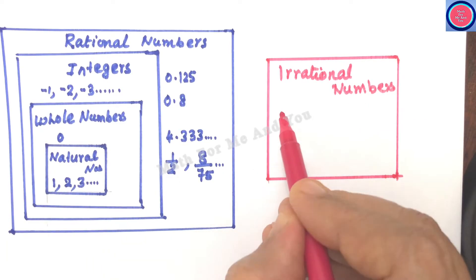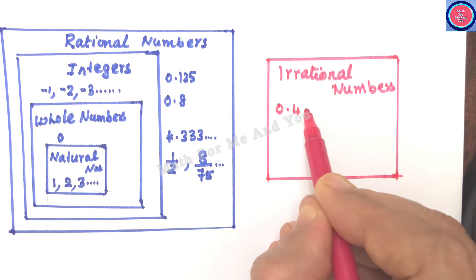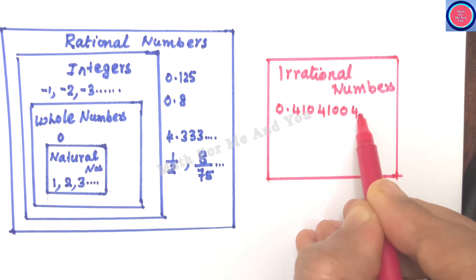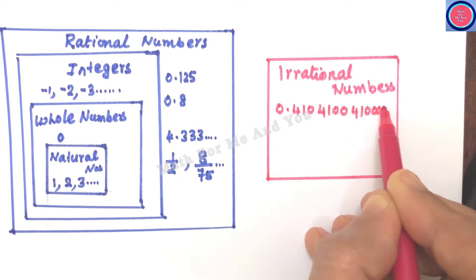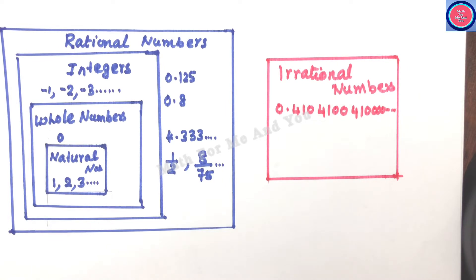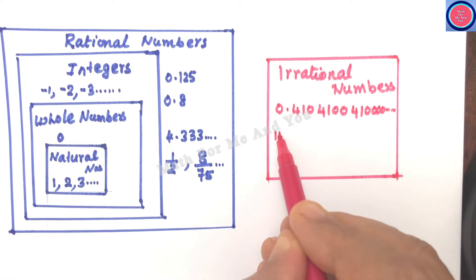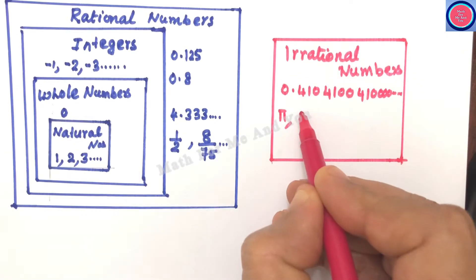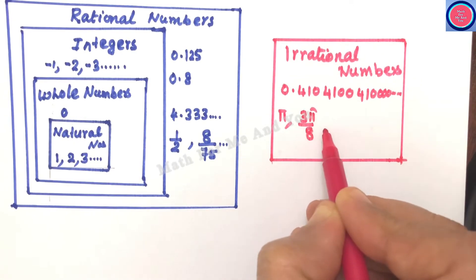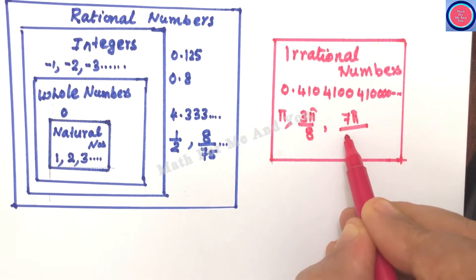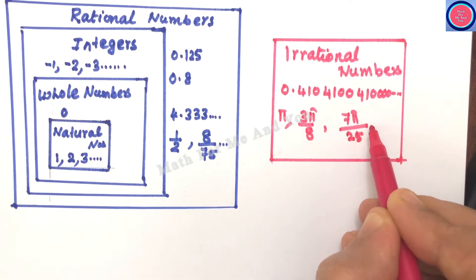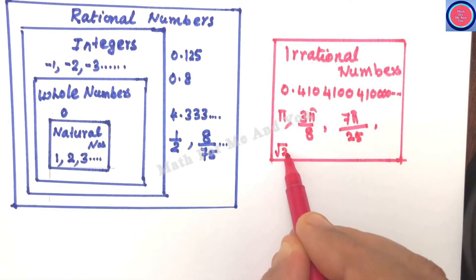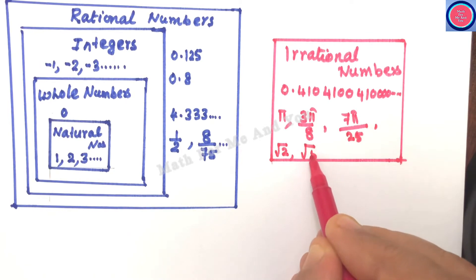The numbers which are not rational are known as irrational numbers. Non-terminating non-repeating decimals are irrational numbers — for example, 0.4104100... etc. Numbers connected with pi are irrational: pi itself, 3π/8, and 7π/25 are all irrational. Also, all root numbers where the value under the radical is not a perfect square are irrational — for example, √2, √5, √3, and √7 are all irrational.